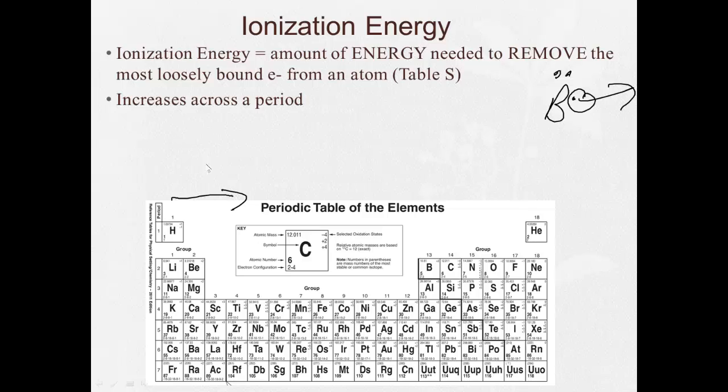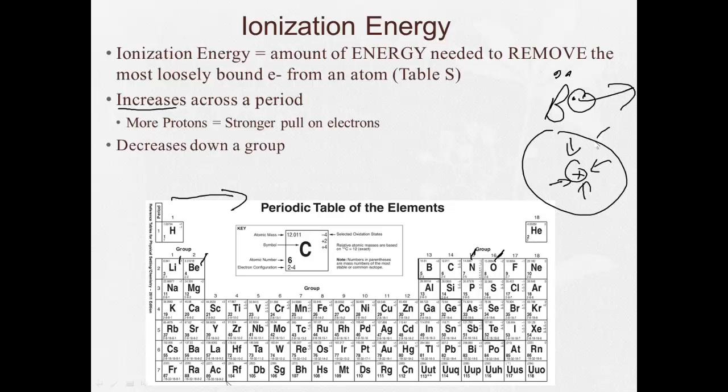As we go across in a period, that's going to increase. It's going to be harder to pull an electron away from beryllium than from lithium. It's going to be harder to pull an electron away from oxygen than from nitrogen. Because since each of these have more protons, they have a stronger pull on electrons. Since the protons are pulling in harder, you have to use more energy to pull them away.